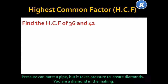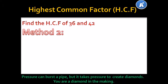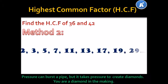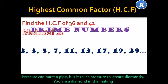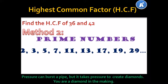Let's look at Method 2. Method 2 uses prime numbers. Do you remember your prime numbers? A prime number is a number that has only two factors — one and itself. Let's refresh your memory with our prime numbers: 2, 3, 5, 7, 11, 13, 17, 19, 29 — and they can go on forever and ever. These are our prime numbers.